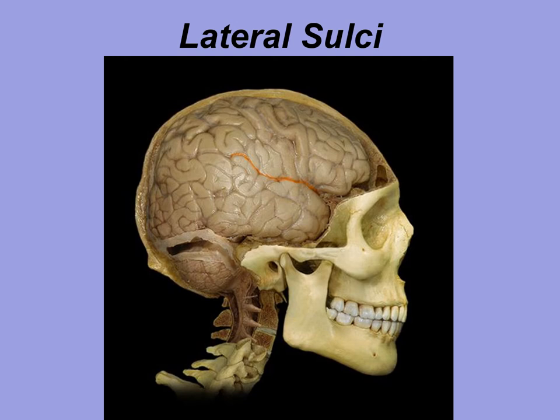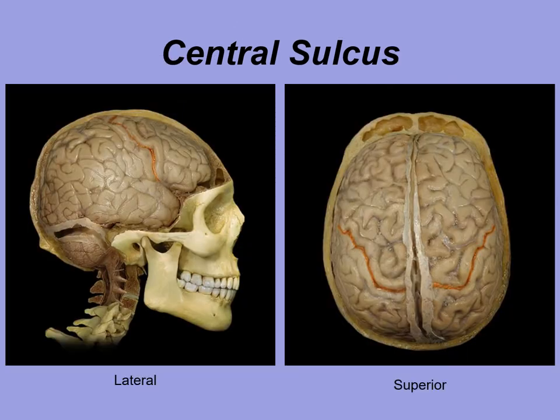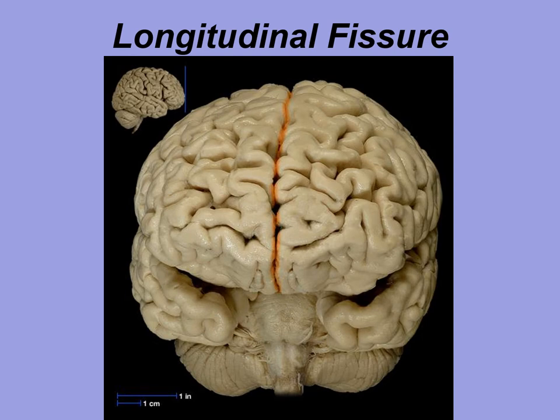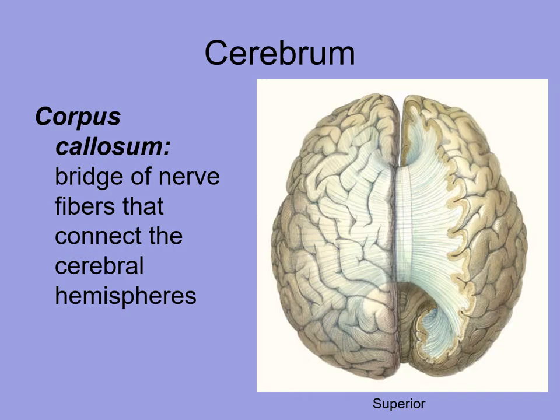The lateral sulcus is shown here, going through different components which you can see are highlighted. The central sulcus can be seen from the lateral and superior view. The longitudinal fissure is the deepest one, separating the two different hemispheres. The corpus callosum is a bridge of nerves that connects the left and right hemispheres together.